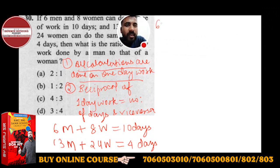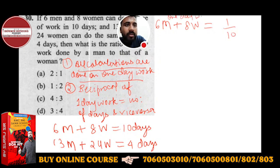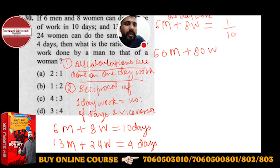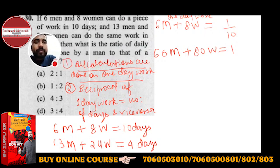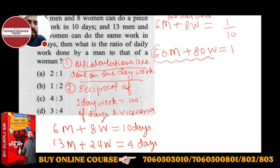Now I'll do the calculation. First: six men plus eight women — their one day work will be 1/10. All these are one day work values. Now I can cross multiply: 60 men plus 80 women is equal to 1. This is one important equation.